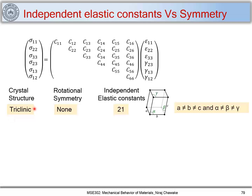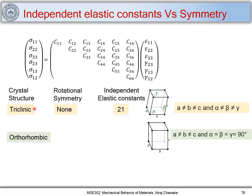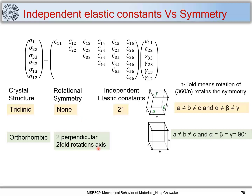Now let us consider the orthorhombic crystal structure, defined as a ≠ b ≠ c and α = β = γ = 90°. Let us find out its rotational symmetry. It has two perpendicular two-fold rotation axes. When we say n-fold symmetry, that means if I rotate by 360°/n by that amount, the structure retains its symmetry.